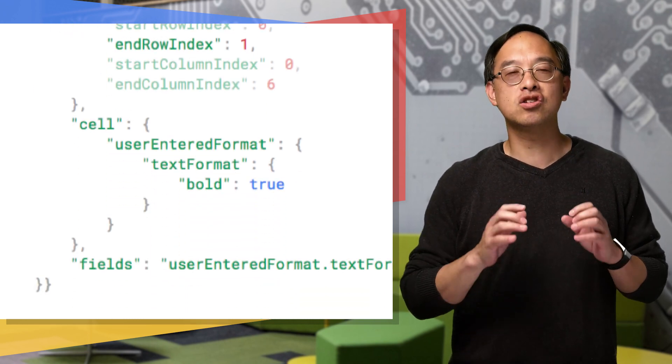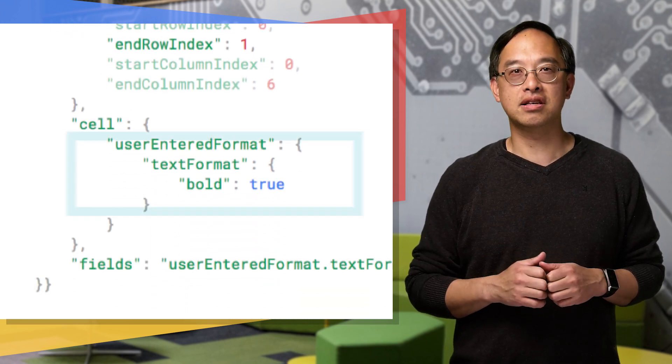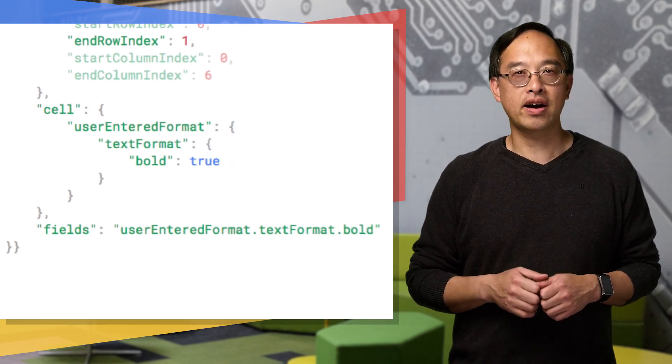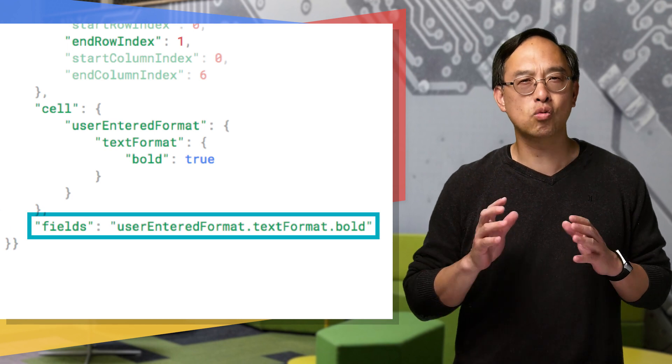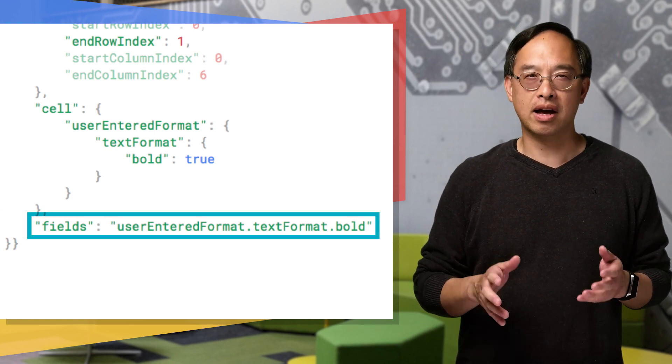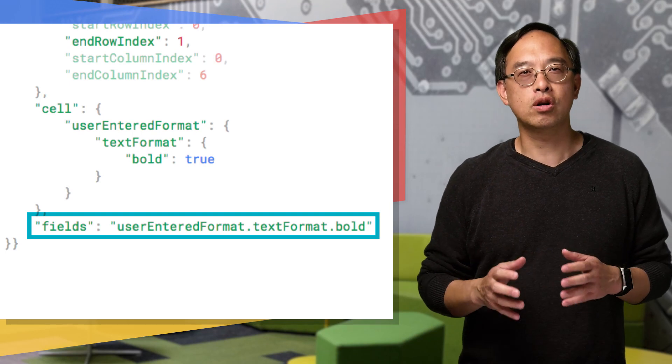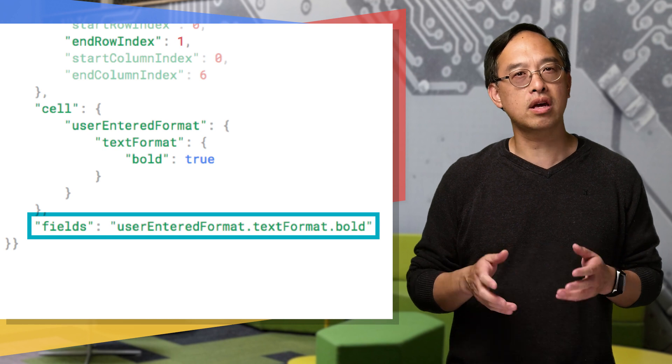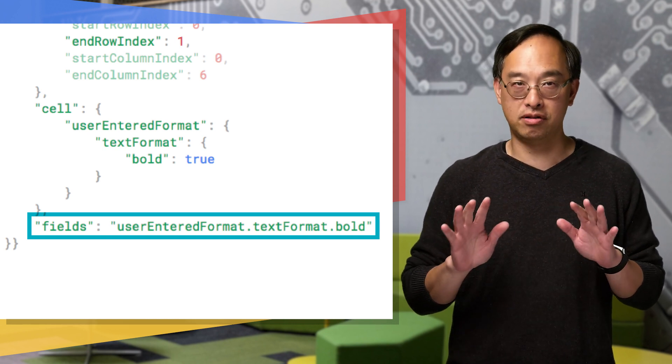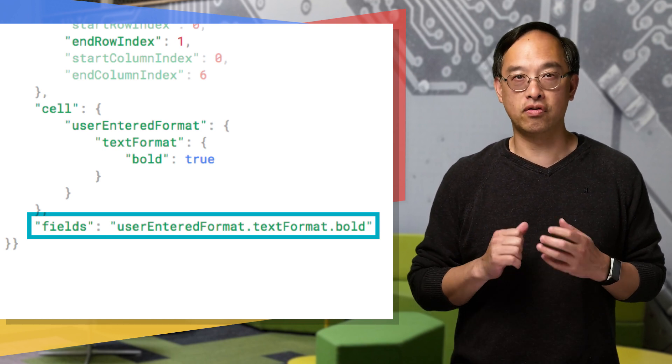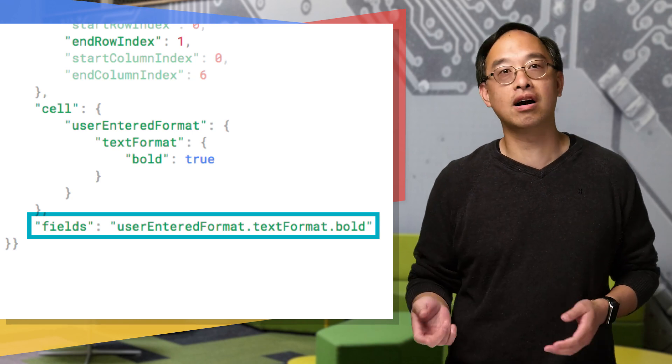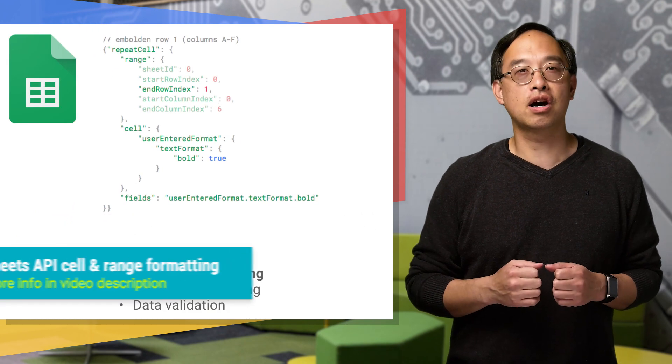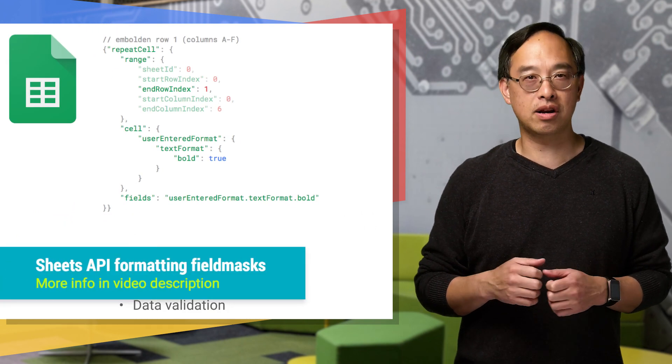Next is what you want changed in the cells. In our case, it's the text format. Specifically, its bold property, toggling it to true. Finally, fields specifies which fields should be affected. Think of it like a bit mask or a field mask. Here, we don't want to change any existing formatting other than the cell's bold setting. For example, if you only had userEnteredFormat without the .textFormat.bold as your fields element, you're going to lose things like the cell's background color, the vertical alignment, and other properties. Check our docs to see other formatting examples, as well as to find out more about field masks.